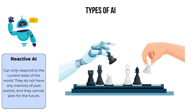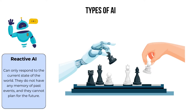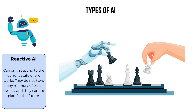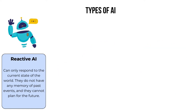An example of that is a chess-playing robot that only follows a set of logical instructions and reacts properly based on the opponent's move.